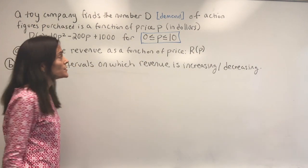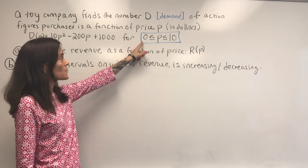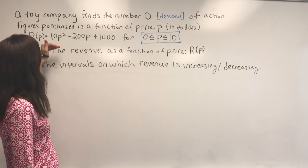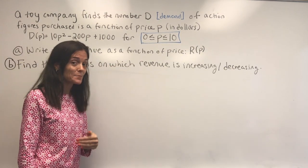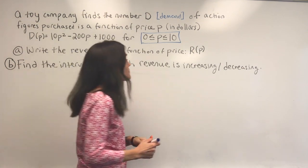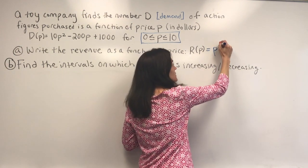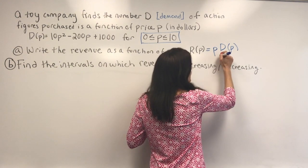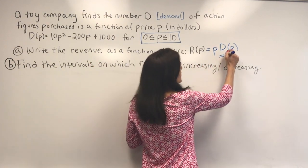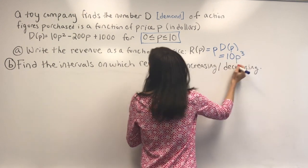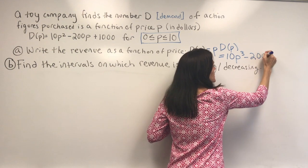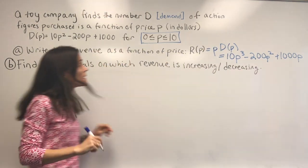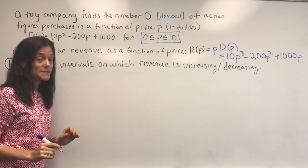We want to first write the revenue as a function of price, and it will be on this closed interval as well. If you charge P dollars and there are D(P) items purchased at P dollars, your revenue would just be the product. So revenue is P times the number of items sold, which, if we write this out for this particular demand function, we get 10P cubed minus 200P squared plus 1,000P. This is our revenue, and we're looking at it only on the closed interval from 0 to 10.